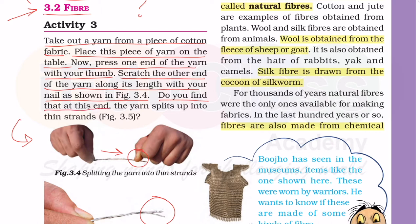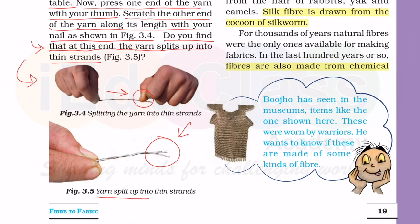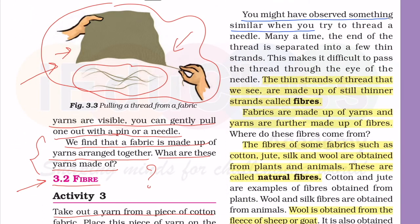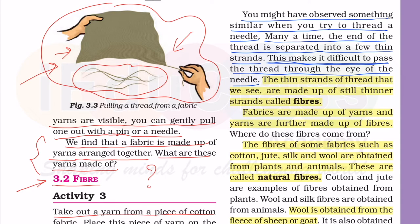Do you find that at this end the yarn splits up into thin strands? Yarns split up into thin strands - बहुत ही पतले धागे। आपको याद होगा 9 cord, 6 cord, 12 cord के धागे - वो cords को ही strands बोलते हैं। You might have observed something similar when you try to thread a needle - many a time the end of the thread is separated into a few thin strands, making it difficult to pass through the eye of the needle.